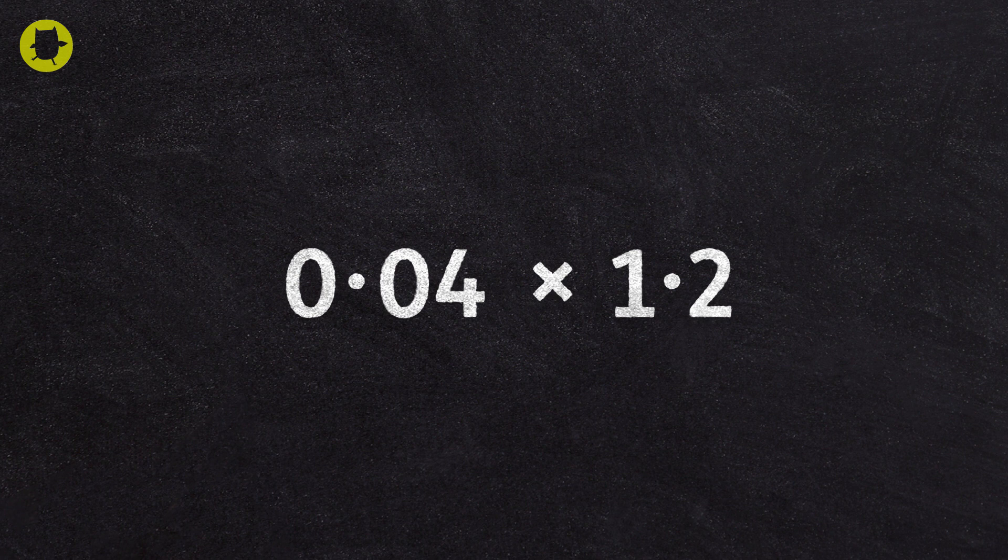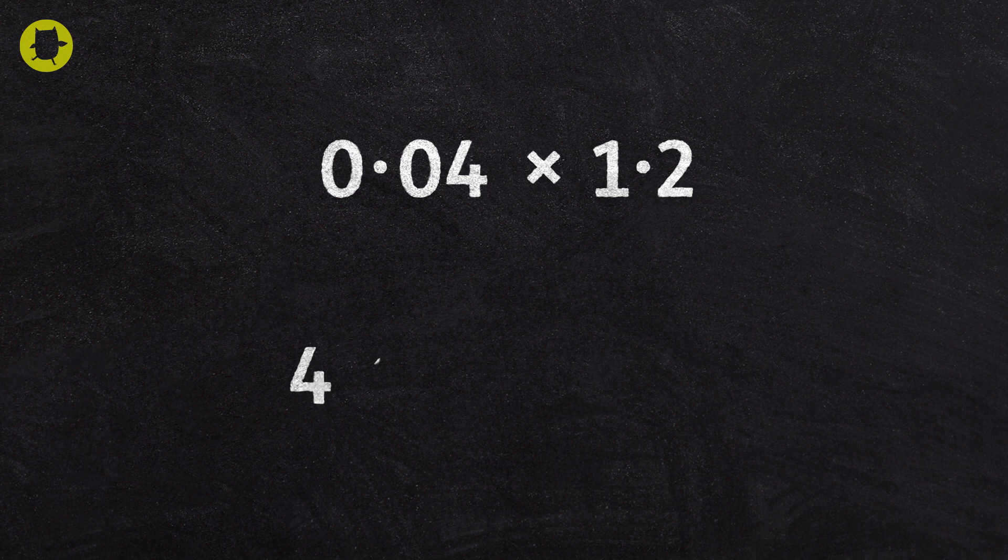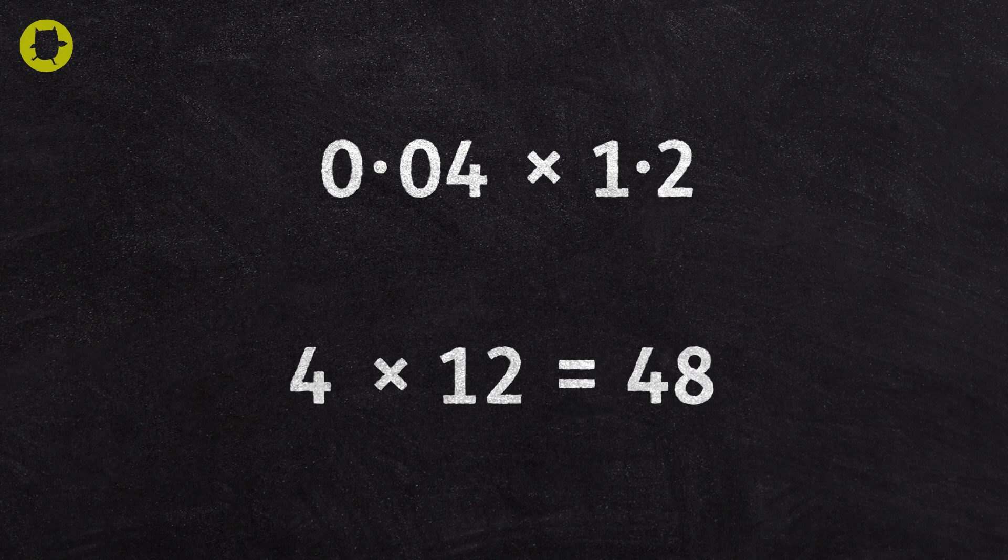Just for now, we ignore the decimal points and multiply 4 by 12. Then we count the number of digits after the decimal point in the question, and make sure the answer has the same number of digits after the decimal point.